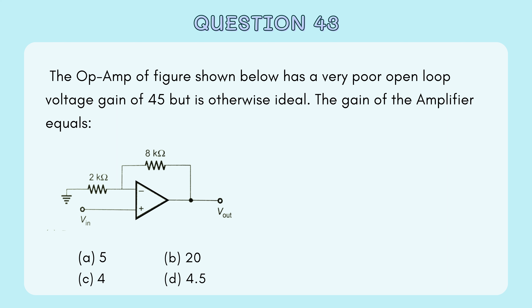Here we have the diagram given. The feedback resistance given is 8 kohm and the inverting terminal input resistance given is 2 kohm. The options given are: option A is 5, option B is 20, option C is 4, option D is 4.5. Let's see the solution.